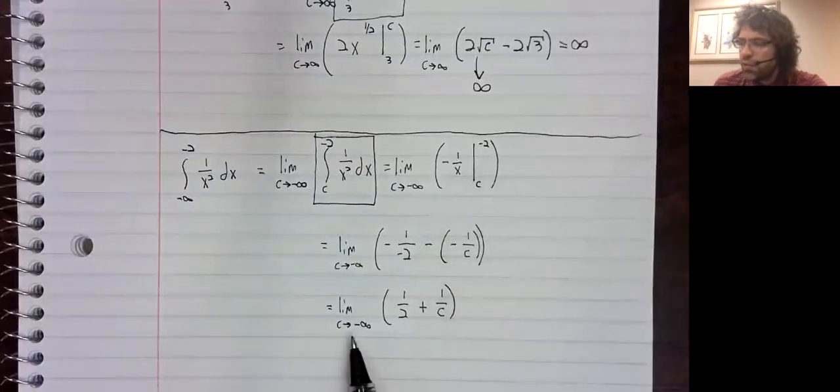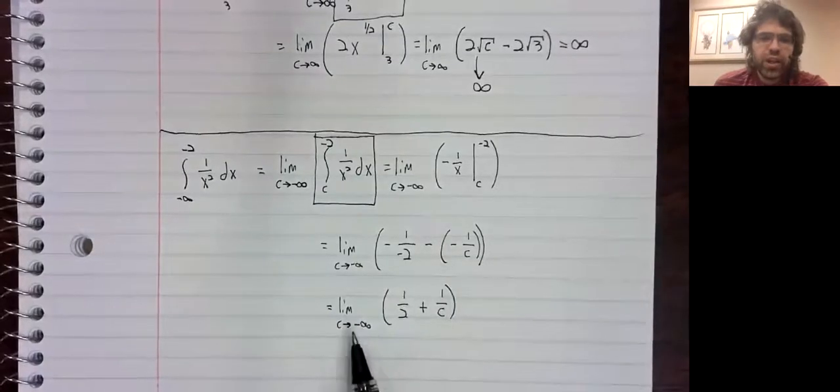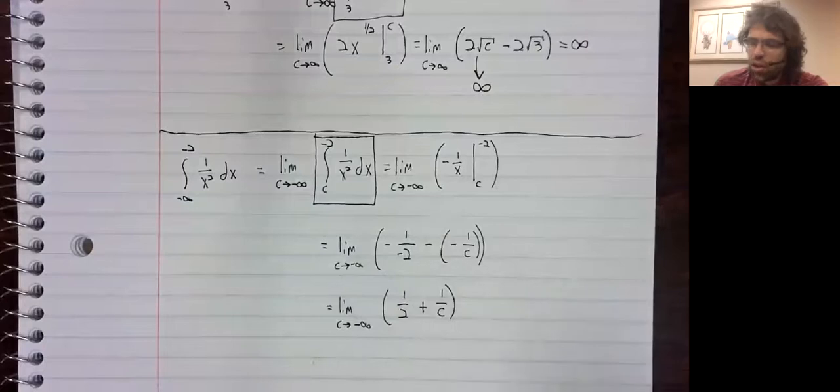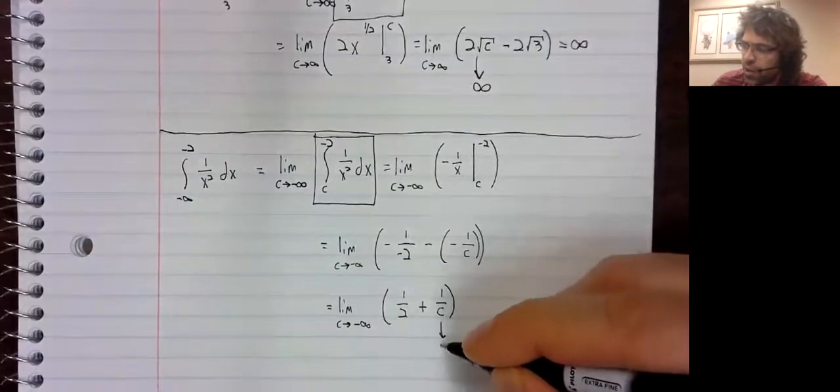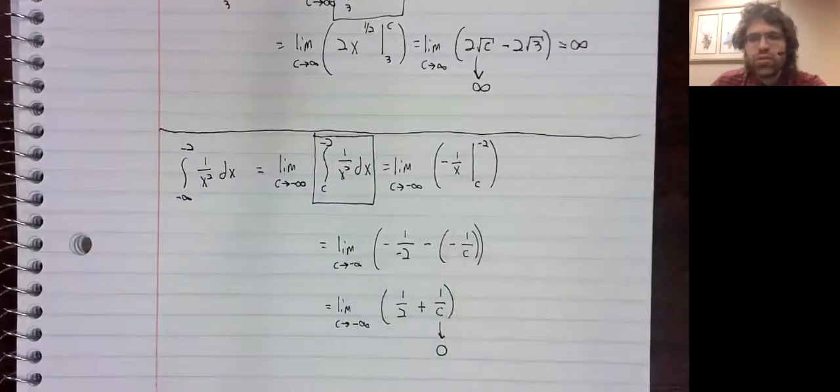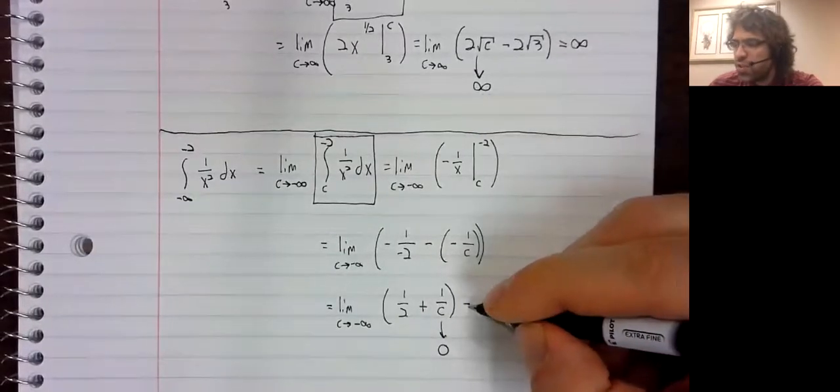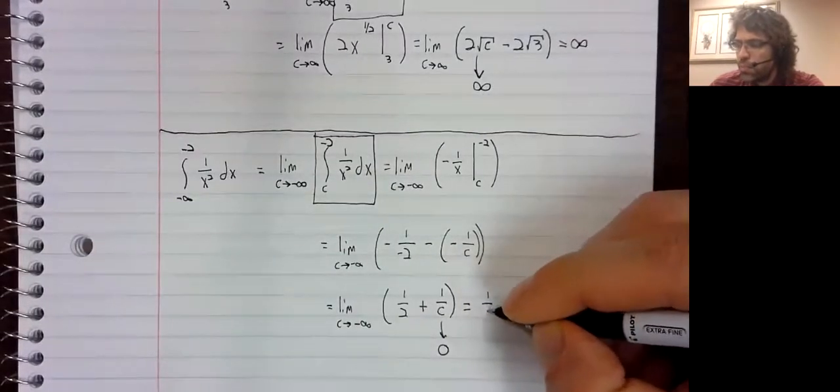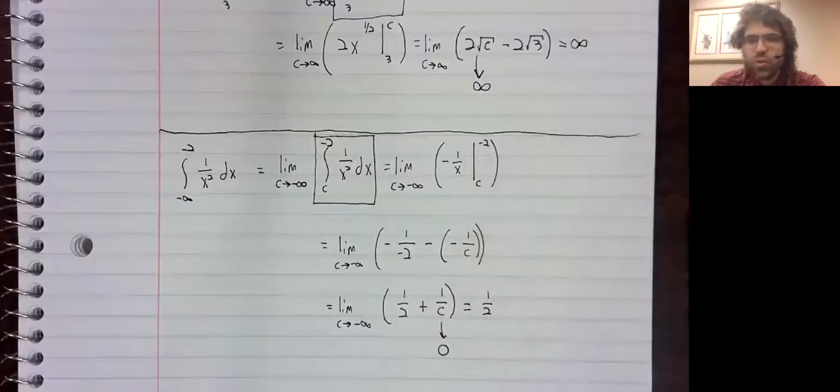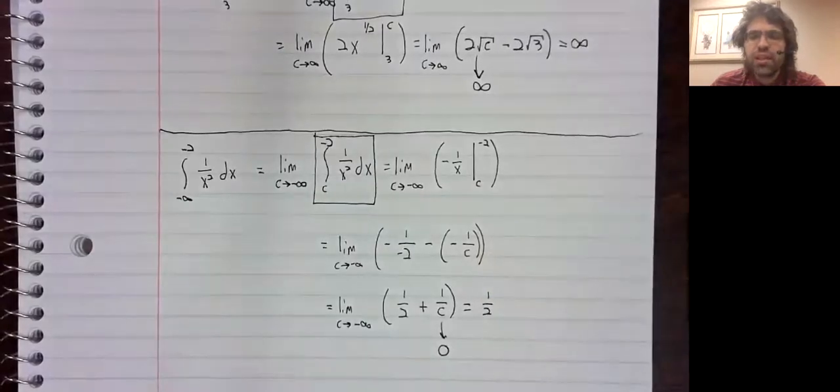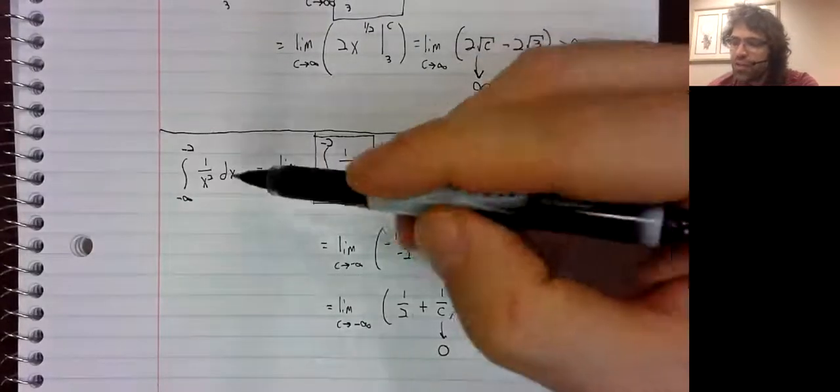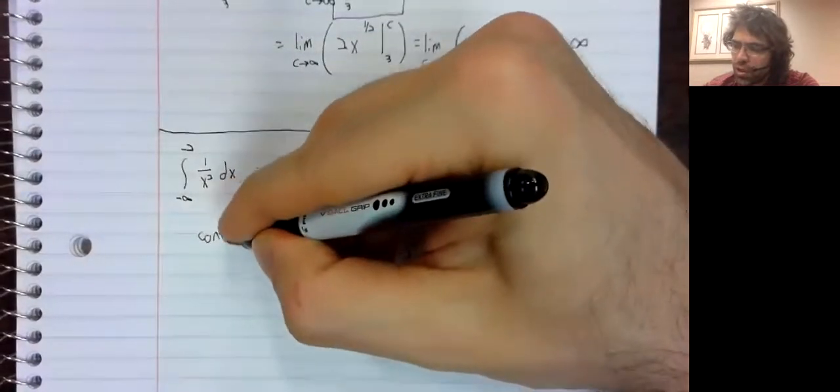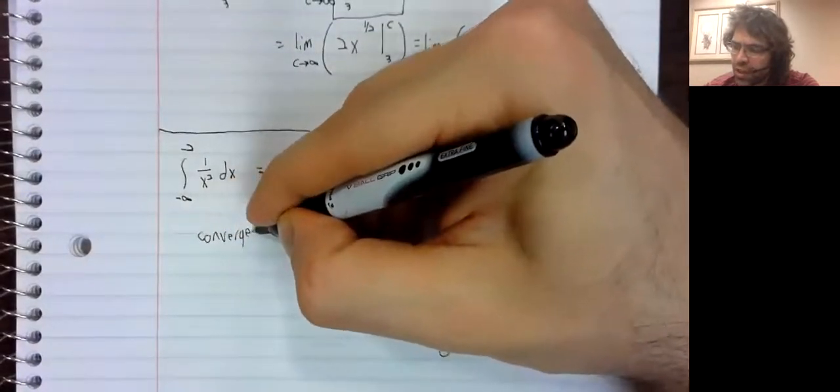Now as c goes to negative infinity, one half is a constant. One over c goes to zero. So this limit exists. This integral converges.